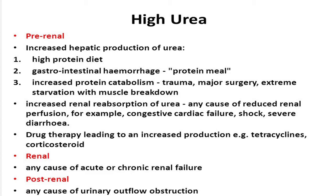High urea conditions include consuming a high protein diet and muscle breakdown increasing urea. If you have severe dehydration — in cases of diarrhea, loose motions, cardiac failure, or shock — blood supply to the kidney shuts down, causing waste buildup. Certain medications like tetracycline can raise urea levels. Chronic kidney disease and kidney tract obstruction like kidney stones also raise blood urea levels.